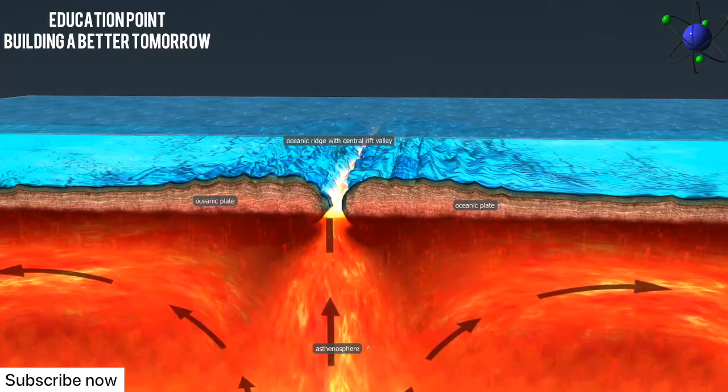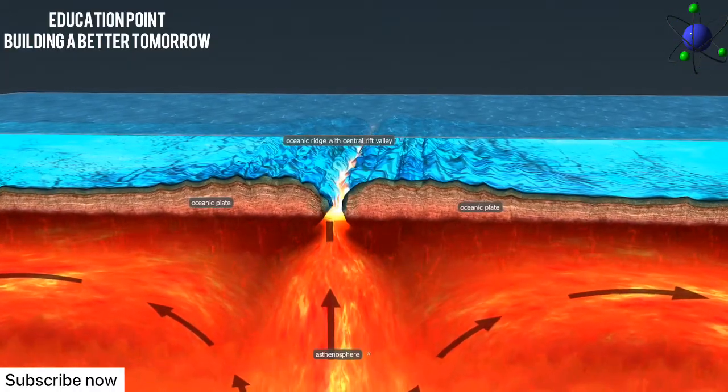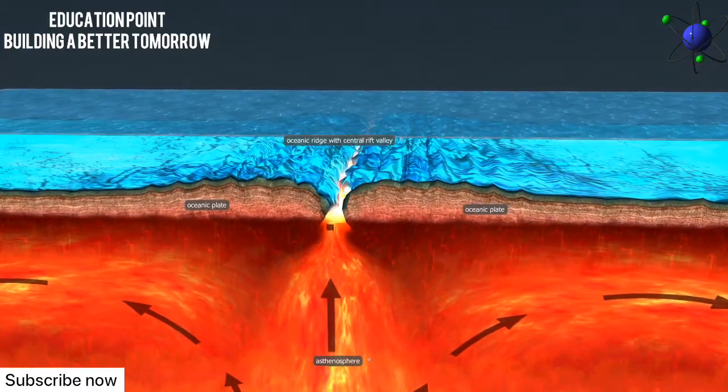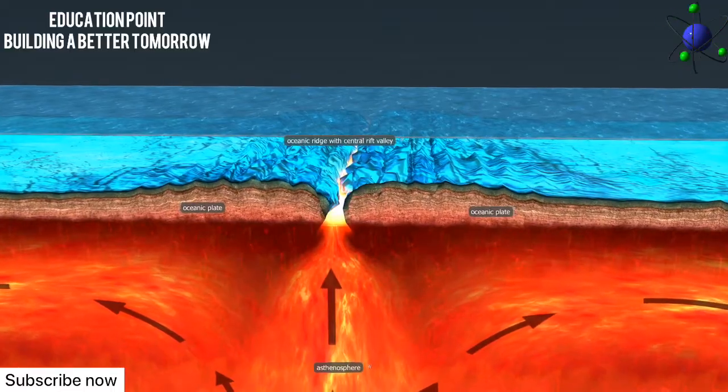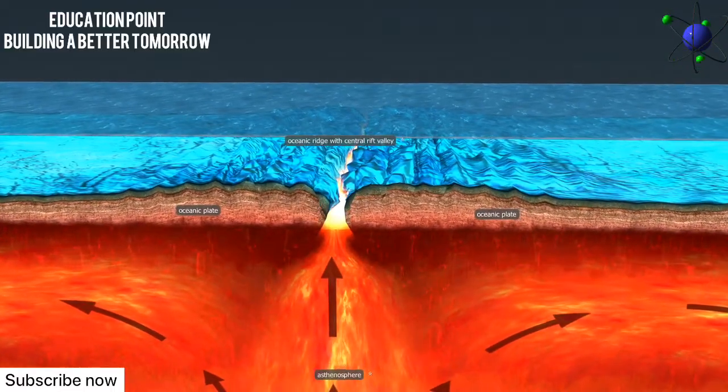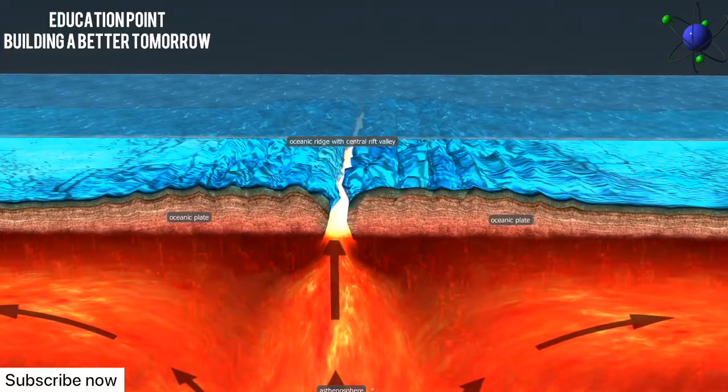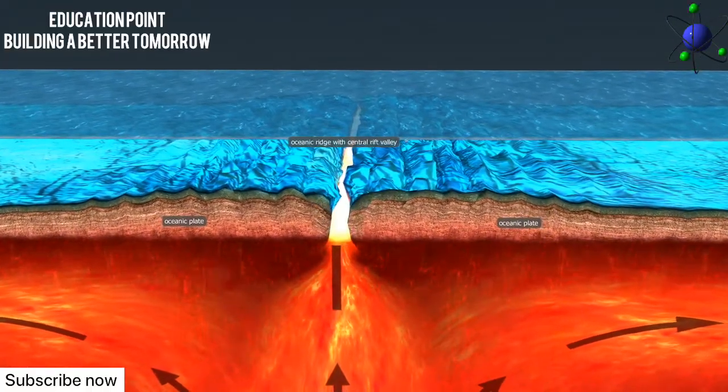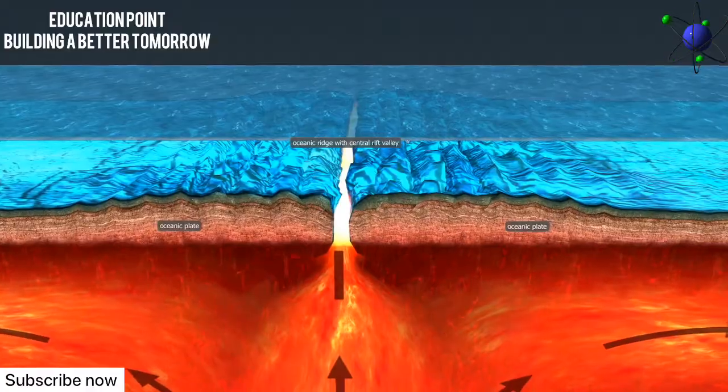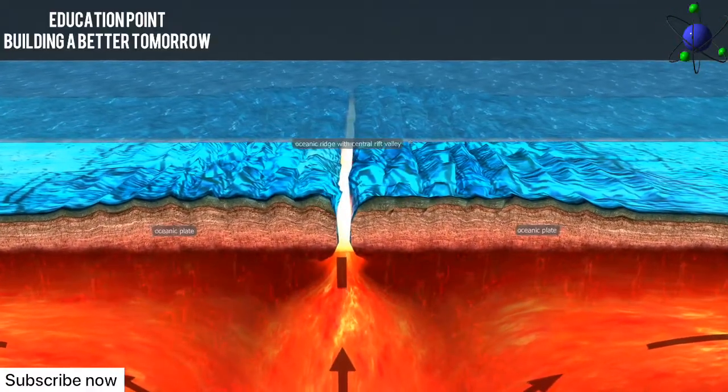As it expands, the mass of molten rock pulls the seafloor apart, causing the tectonic plates on either side of the ridge to move away from each other. Thus, the ocean basin grows wider, a process called seafloor spreading. That is how, for example, the Atlantic Ocean has been formed.